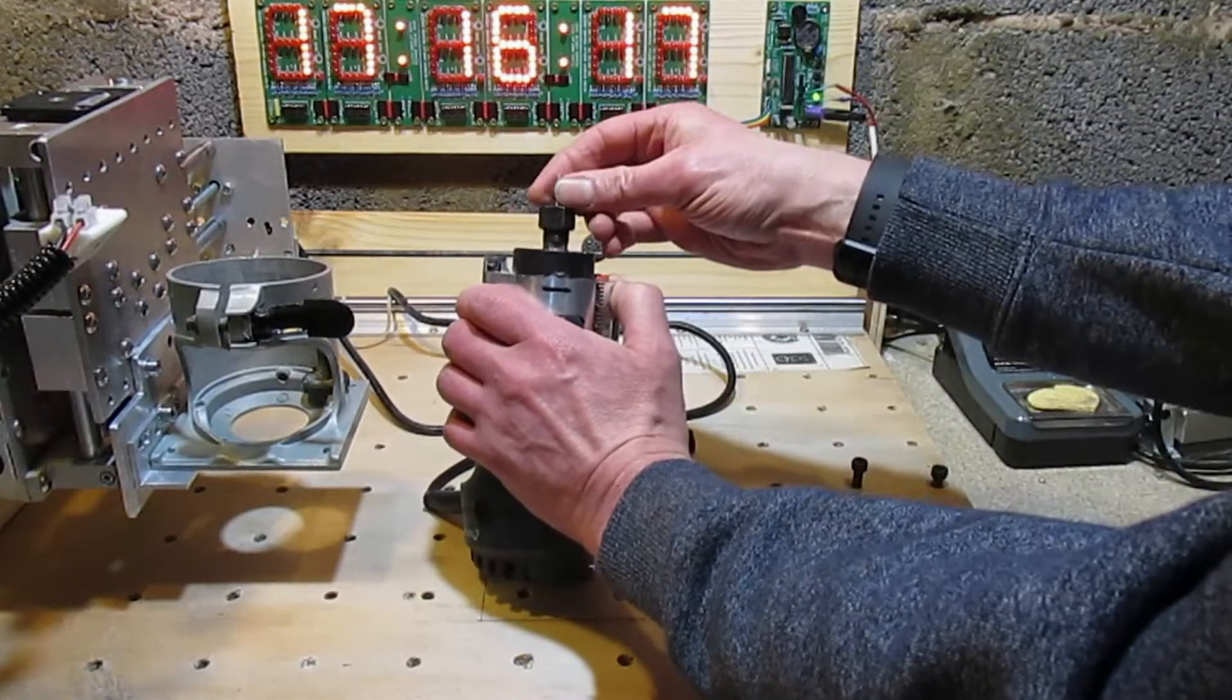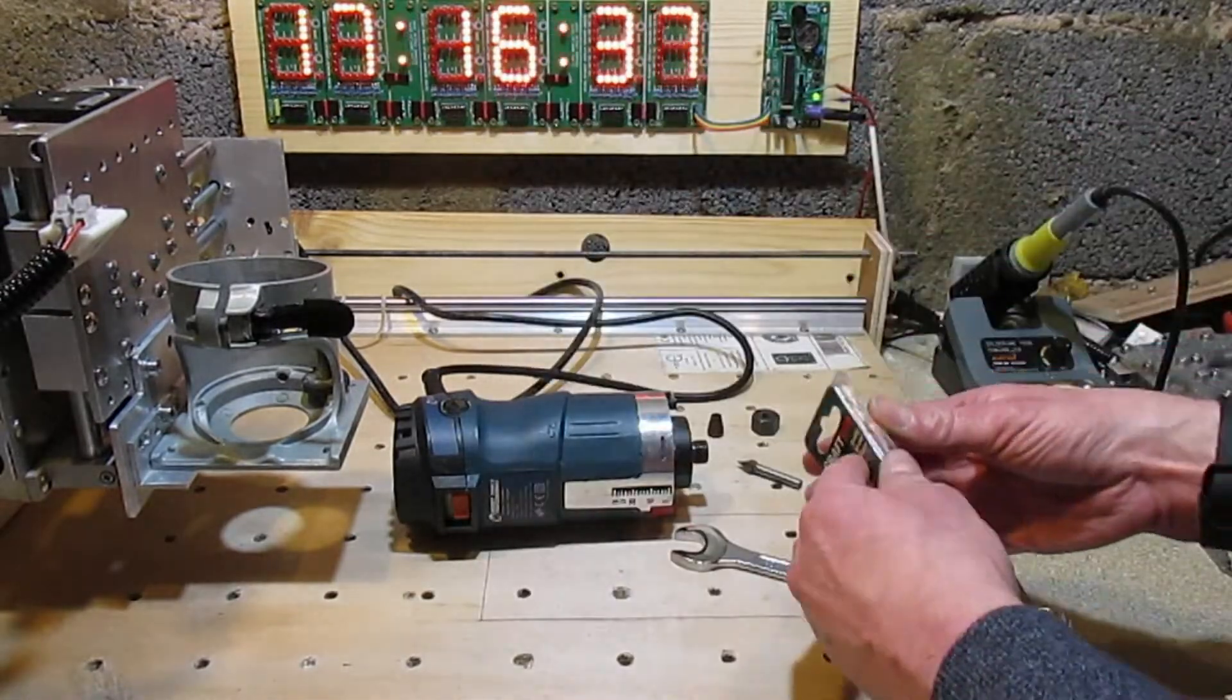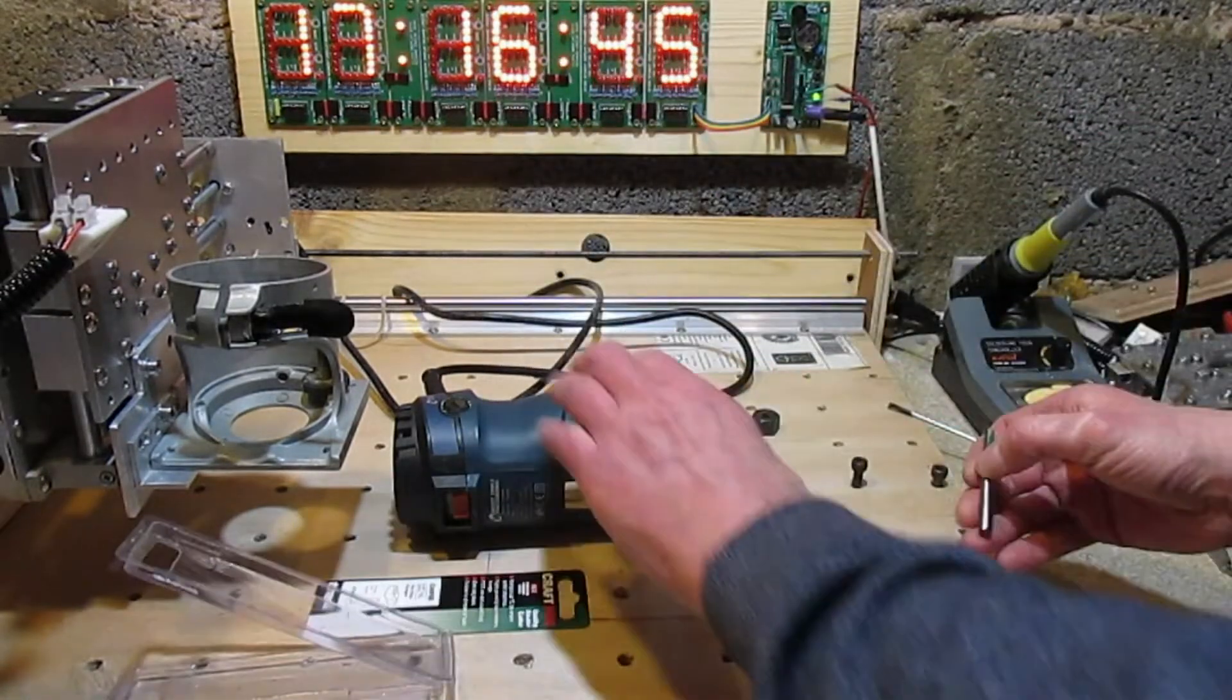I'm swapping a 60-degree V carving bit with a six millimeter shank for a six millimeter diameter carbide router bit with two flutes and a quarter inch shank.